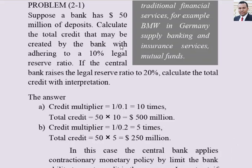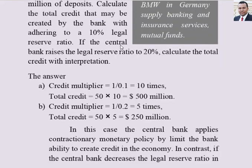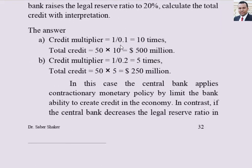Suppose a bank has 50 million in deposits — this is the original deposit. We calculate the total credit that may be created by the bank with a 10% legal reserve ratio (required reserve). The credit multiplier equals 1 divided by the required reserve ratio, so 1 over 10% equals 10 times.